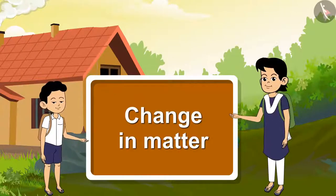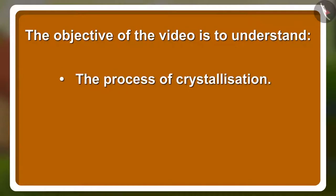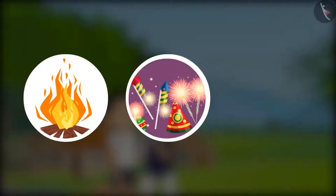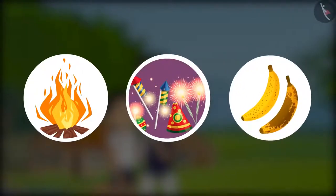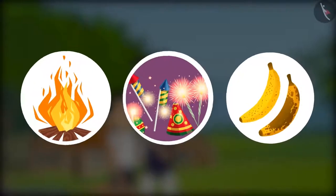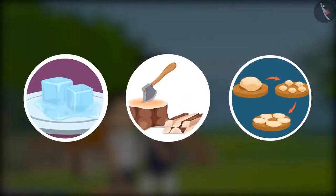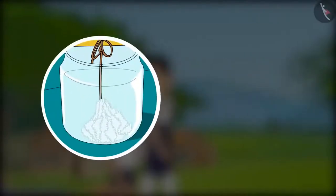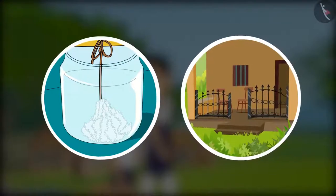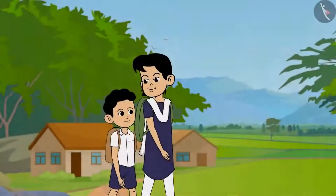Change in Matter. The objective of this video is to understand the process of crystallization and the process of rusting. In the previous video, you learnt about chemical changes and examples associated with it. Chemical changes are permanent and physical changes are temporary. In this video, we will learn about the process of crystallization and rusting of iron. Let us go back to Rama and Babu to learn about these two processes.